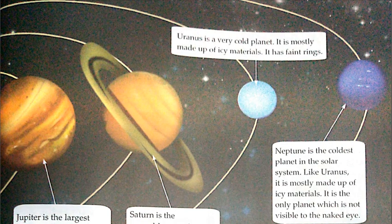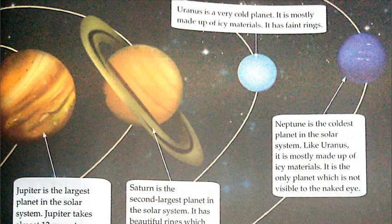Uranus is a very cold planet. It is mostly made up of icy materials. It has faint rings — jo aapko dhundhali si dikhti hain. So Uranus sabse thanda planet hai aur barfile tatton se bana hua hai.